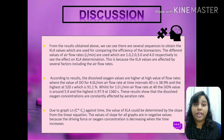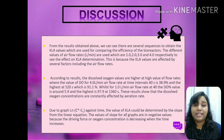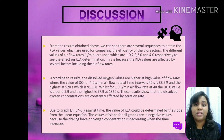From the results obtained, we can clearly see that there are several sequential steps to follow to obtain the KLA value, which is then used to compare the efficiency of the bioreactor. The different flow rate values were used to observe the effect on the KLA determination. According to the results, the dissolved oxygen values are higher at high flow rates — the dissolved oxygen for the 4 liters per minute airflow rate at 40 seconds is 38.9% and the highest at 520 seconds is 91.1%. While for the 1 liter per minute airflow rate at 40 seconds, the dissolved oxygen percentage is around 5.9%, and the highest is only around 97.9% at 1,360 seconds.